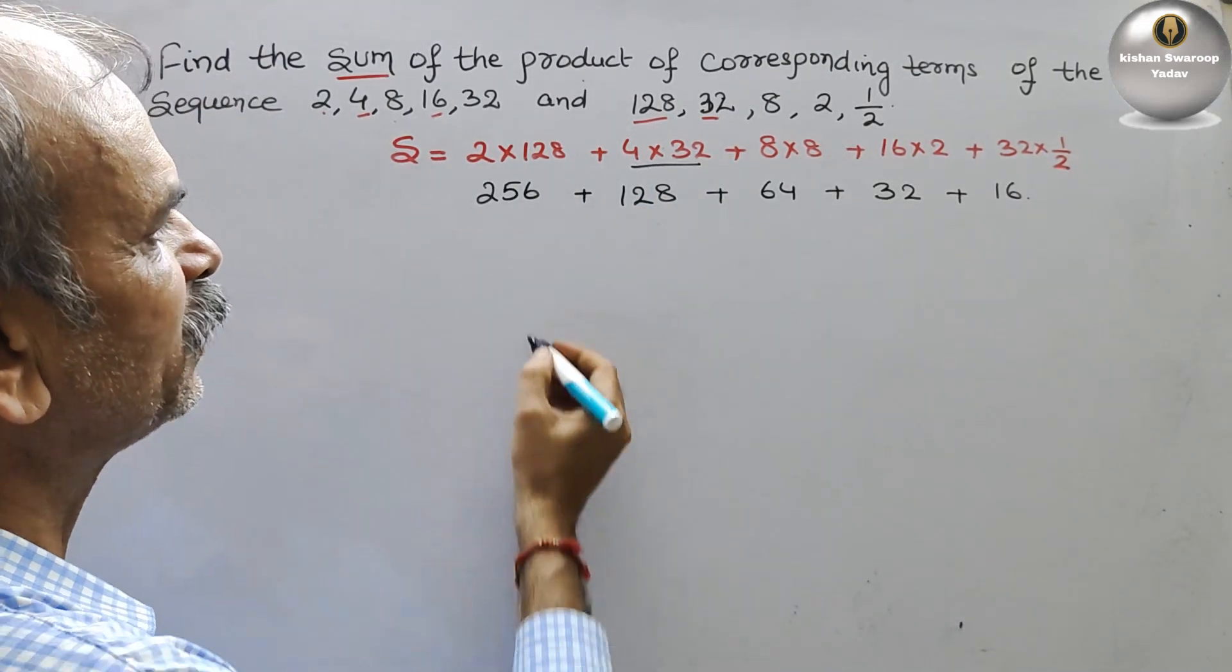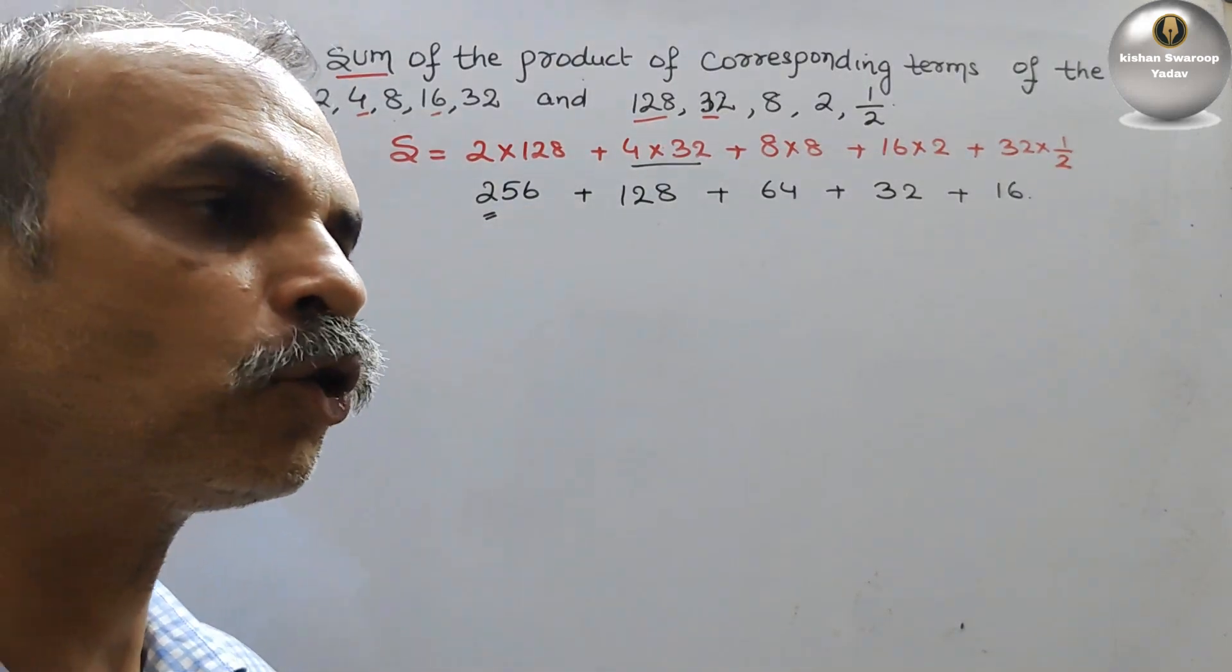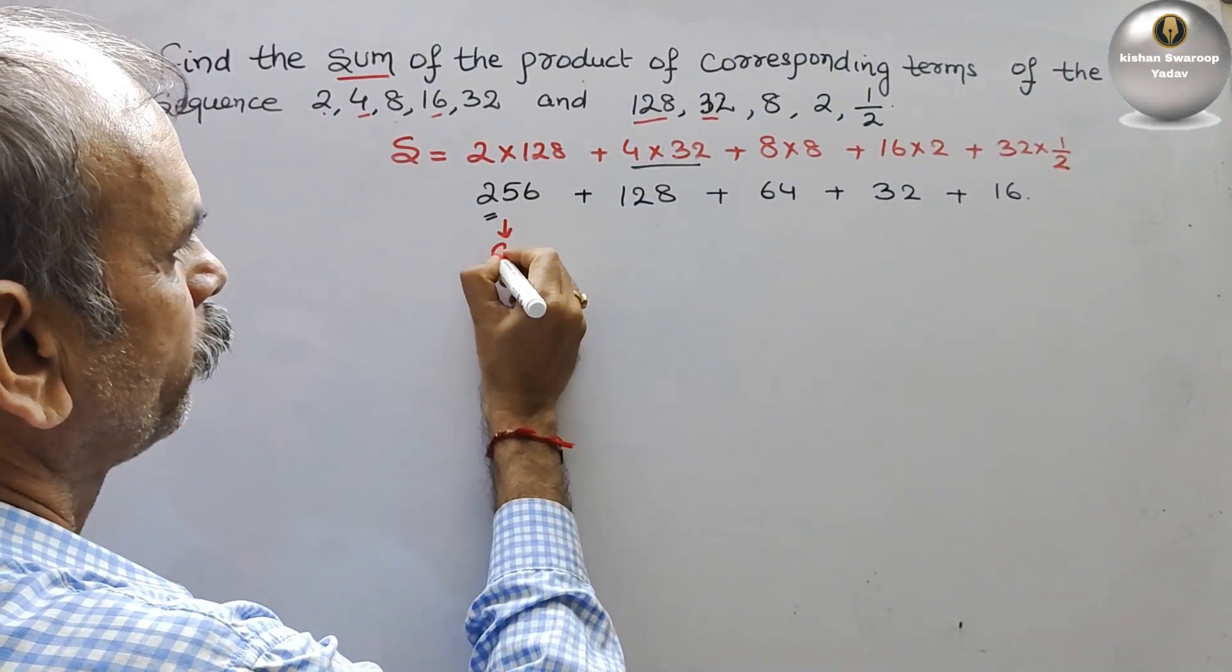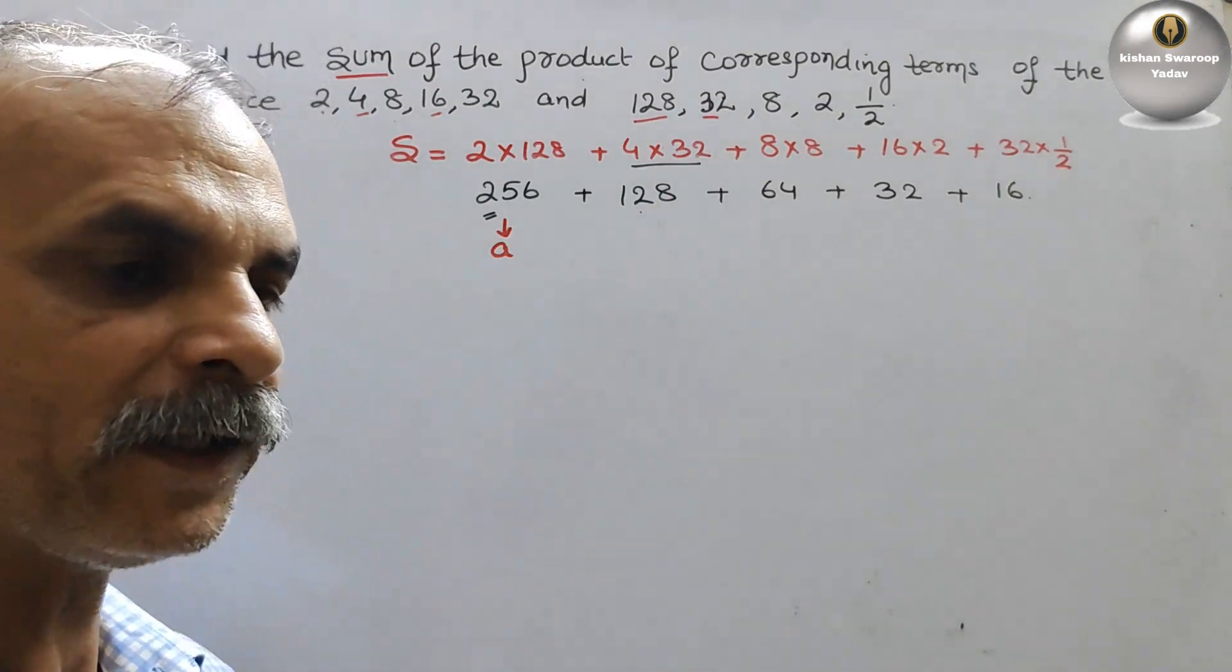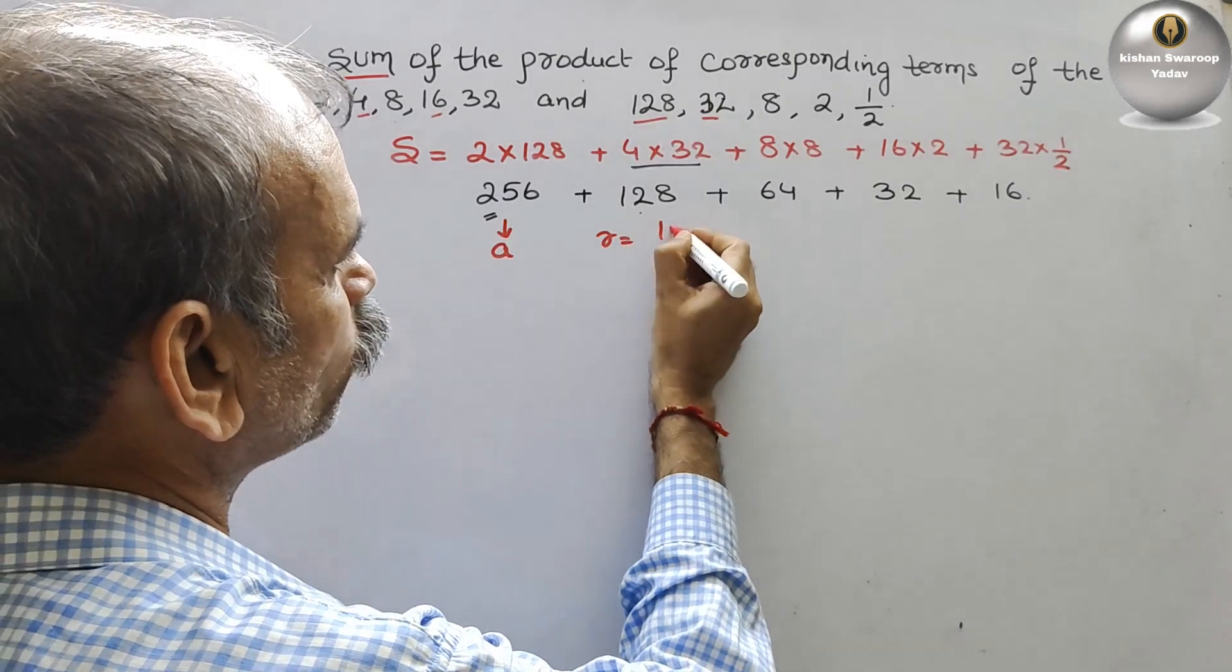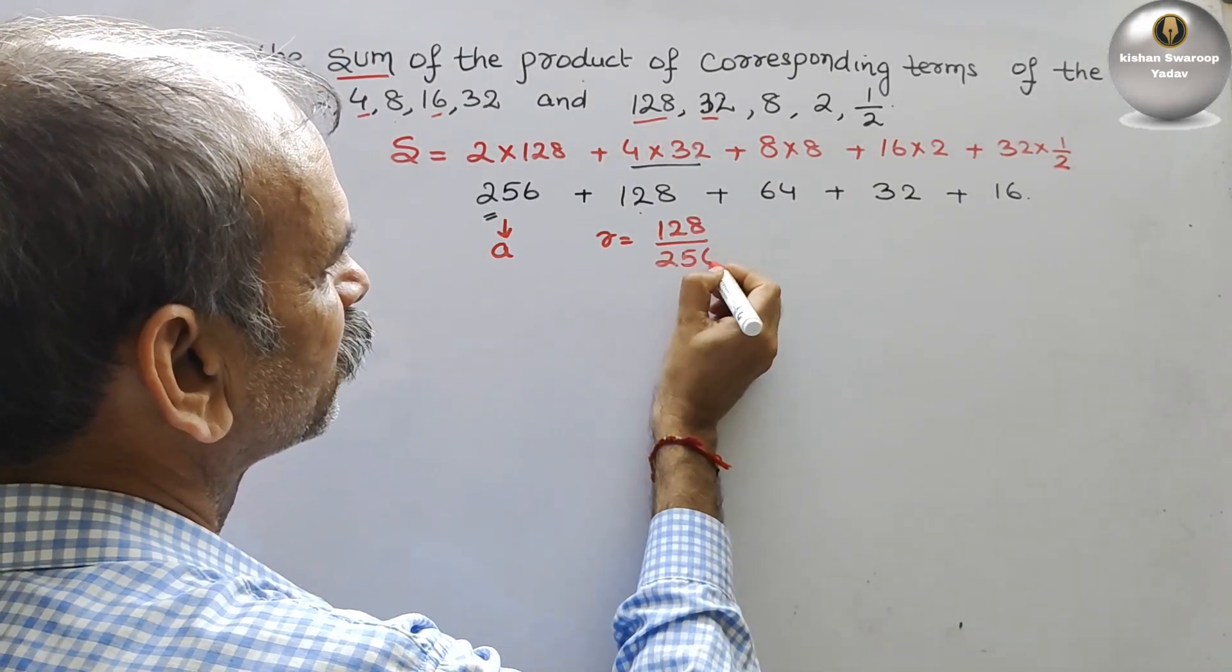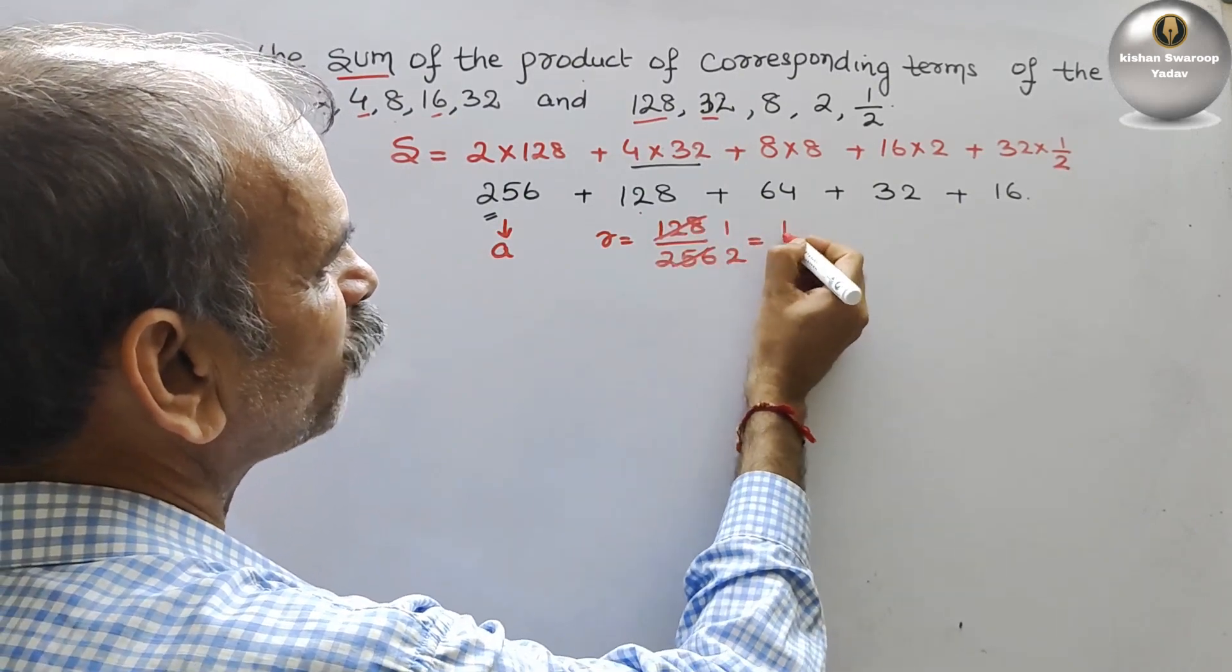You can see this is your first term A. A is 256. Next we will find the common ratio, which is 128 by 256. So it will be 1/2. So R is 1/2.